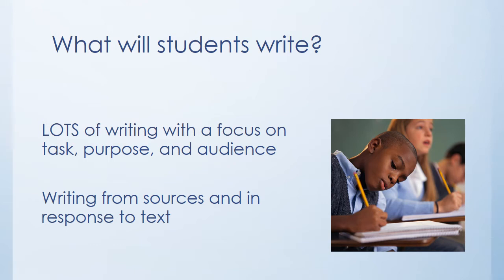Students will also learn how to write in response to the books they are reading. At the elementary level, students have different journals in their classrooms in which they write for different purposes. For example, they have science journals in which they record observations from science experiments or projects. They have reading journals in which they write about the books they are reading in small groups or during independent reading time. They also have writing journals in which they work on longer pieces and practice writing skills learned through classroom instruction.